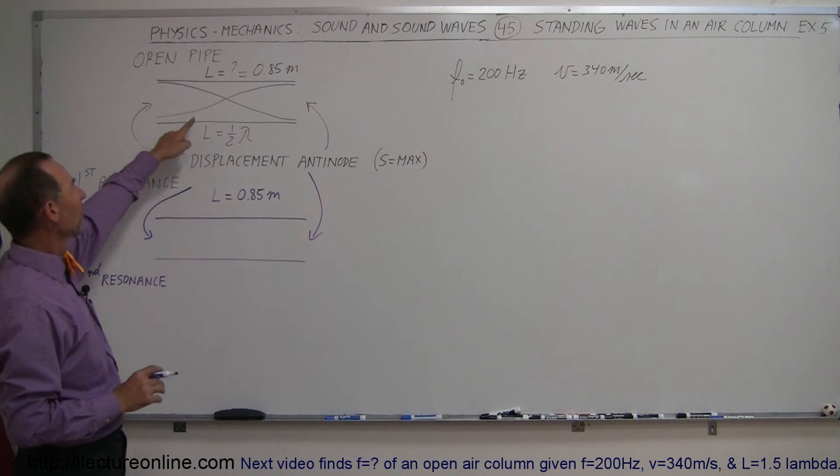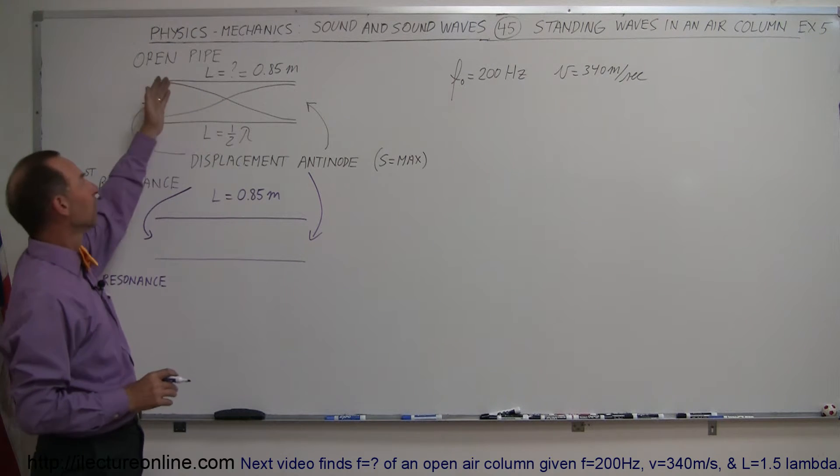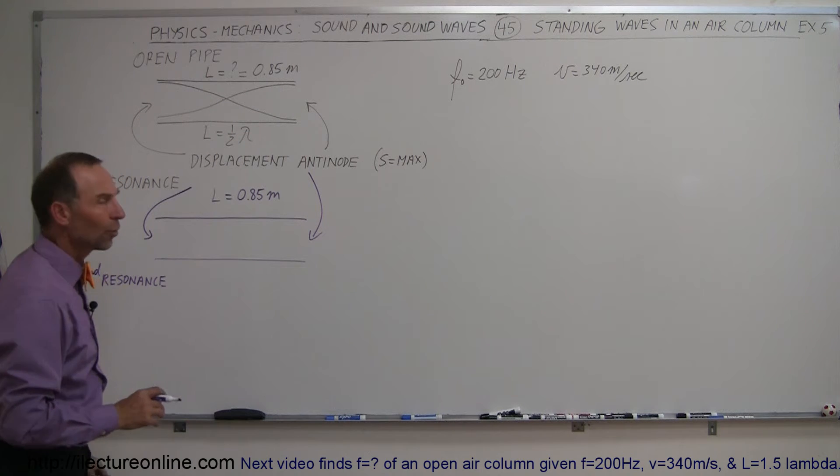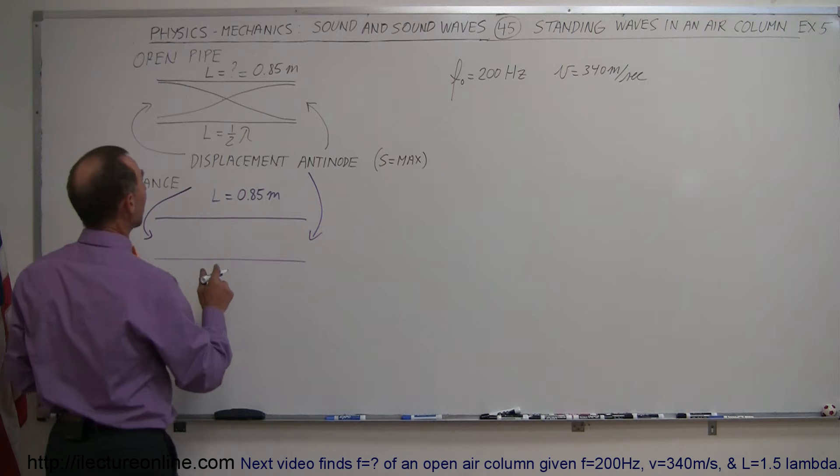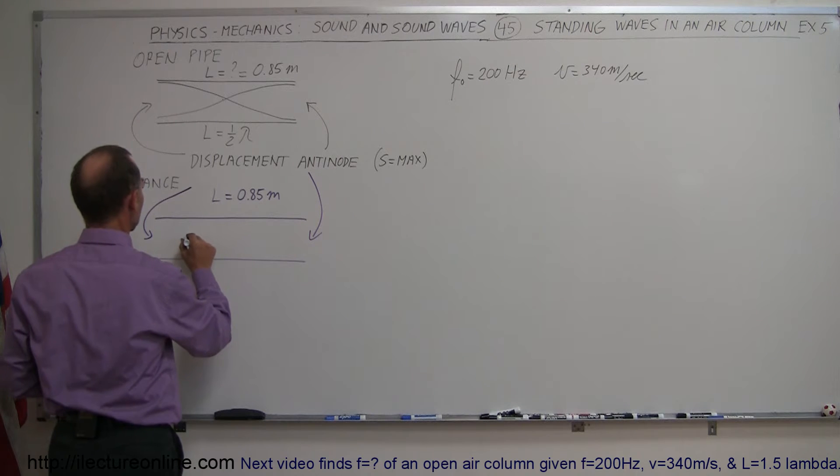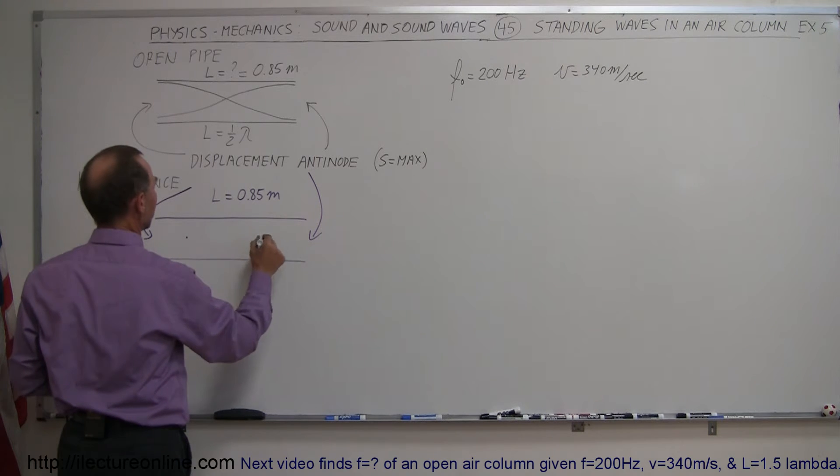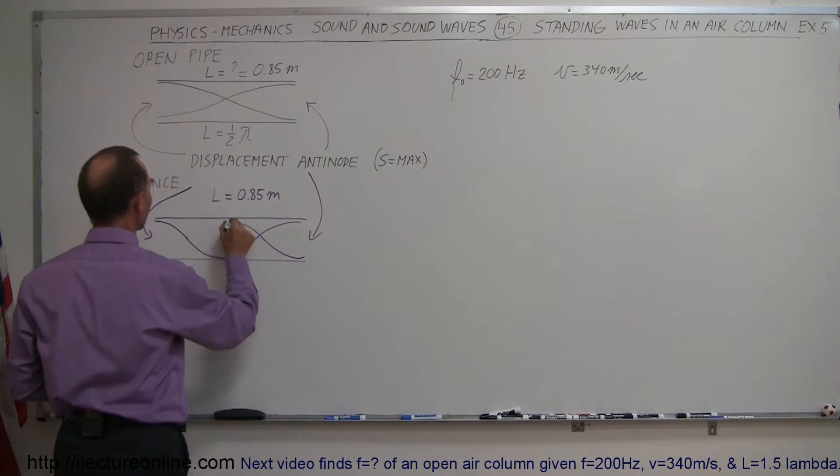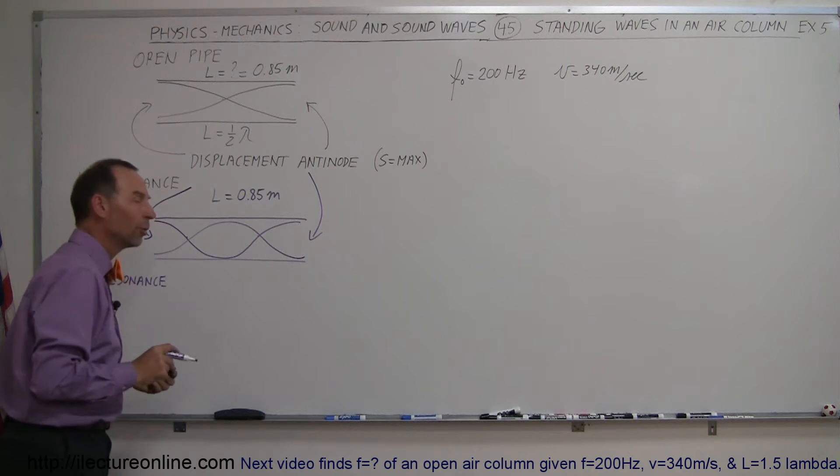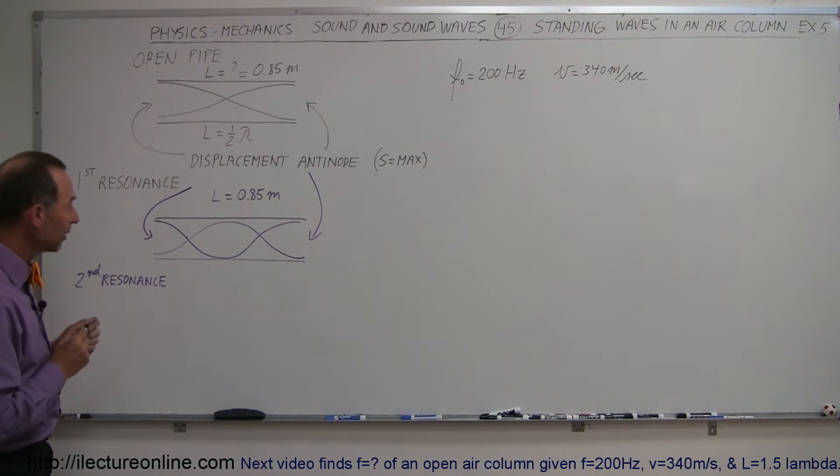The first example we had a situation where we have one node in the middle, two anti-nodes on the end, so here we have to have at least two anti-nodes in the middle, I mean two nodes in the middle, so we have to have one here and one there, anti-nodes on the other side, so it will look like this. That will be the next possible resonance frequency in an open-ended pipe.